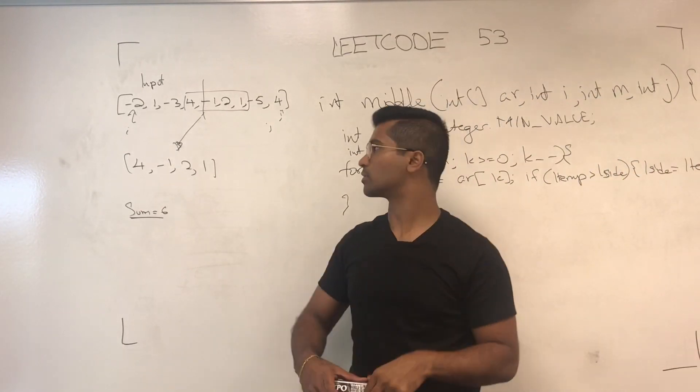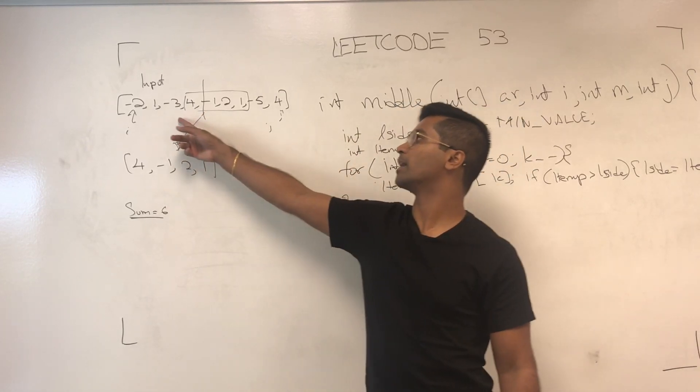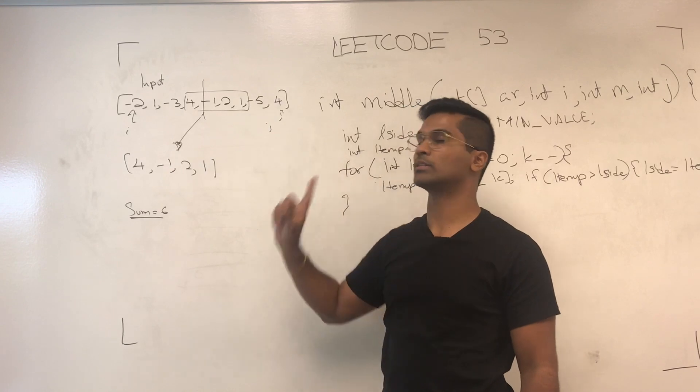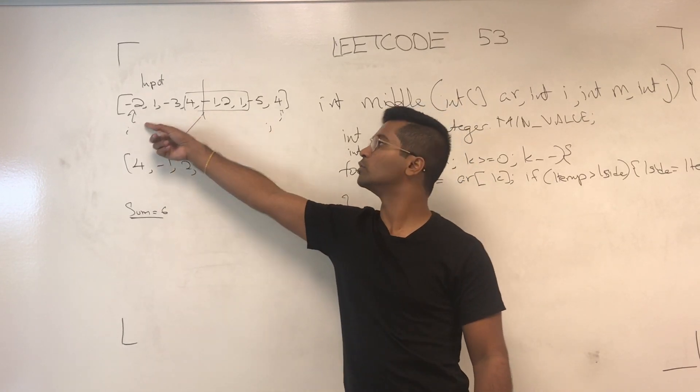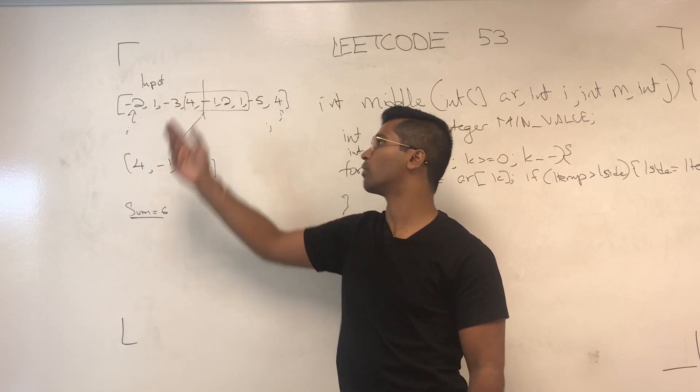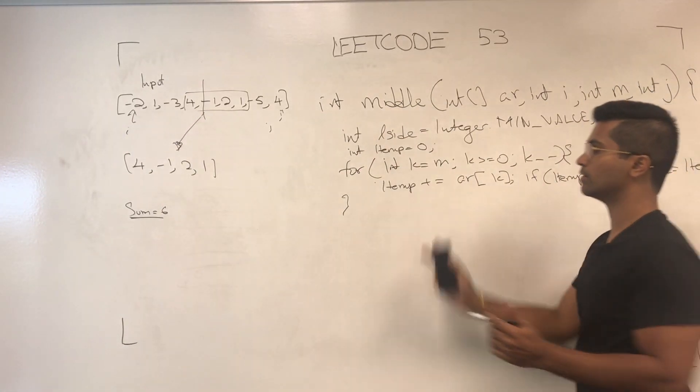First, our left side starts with 0, it gets added 4, 4 is greater than the minimum, then we get added negative 3, which is 1. 1 is not greater than 4, then we add one more, 2. 2 is not greater than 4, 2 plus negative 2 is 0, 0 is not greater than 4, so the maximum is going to be 4. L side is going to be 4 at the end of this.